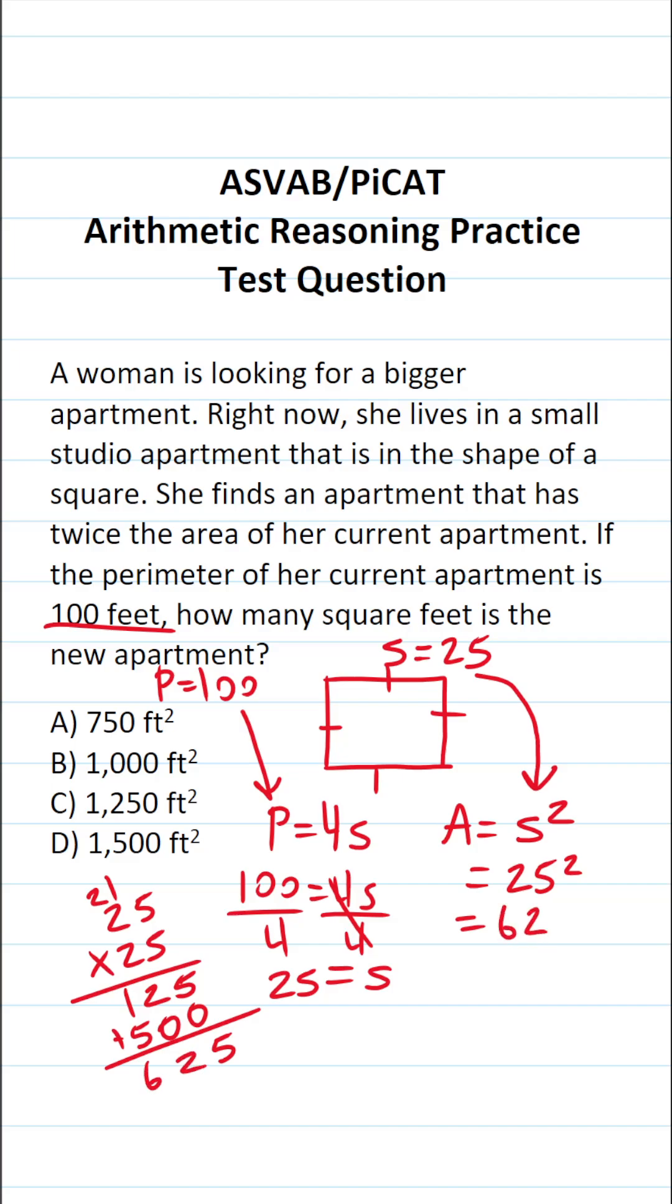So the area of her current apartment is 625 square feet. We know that the area of the new apartment is going to be twice the area of her current apartment. So that's going to be 625 times 2. 5 times 2 is 10, bring down a 0, carry a 1. 2 times 2 is 4, plus 1 is 5. 6 times 2 is 12. So the area of the new apartment is going to be C, 1250 square feet.